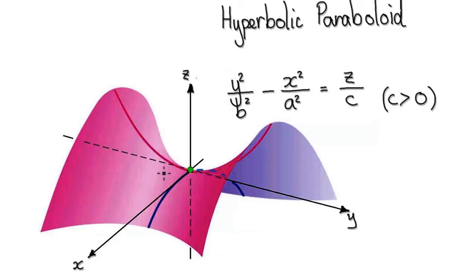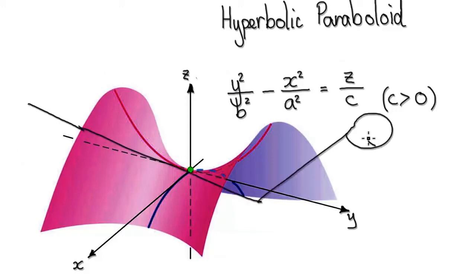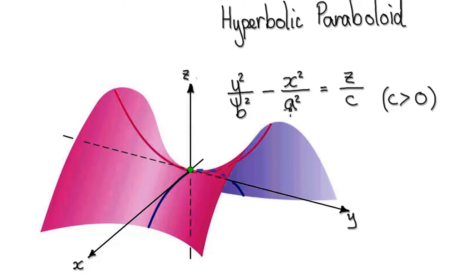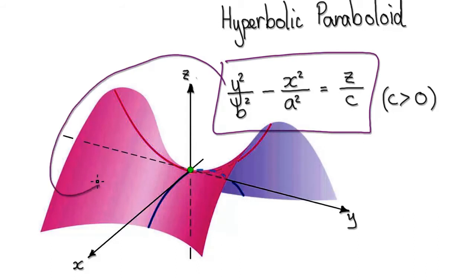You can think of this surface as being like a saddle — something that you put on top of a horse's back, with the rider sitting on top. The right leg would be on this side, and the left leg would be on the other side. So imagine this surface as being like a saddle. Let's try and understand why this equation gives you this surface.